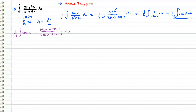We're going to go another layer deep into substitution, but this time we're already using u, so instead we're going to use t — we can call it t substitution. So let's let t equal secant u plus tangent u. Now let's find an expression for dt/du because we need that in order to integrate with respect to t.